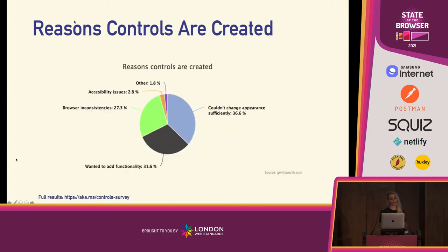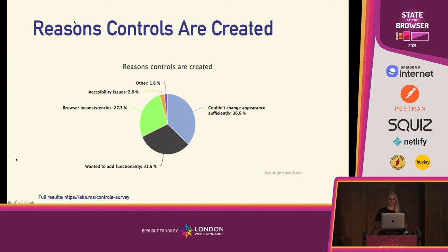Then he wanted to know why developers were rebuilding controls from scratch. Over a third said it was because they couldn't change the appearance sufficiently. Another third just wanted to add functionality — they wanted to extend their control. And just under a third said it was because of browser inconsistencies, which we can probably assume has to do with appearance. If we lump that in with the first group, that's two-thirds of developers spending all of this time recreating controls just for appearance.